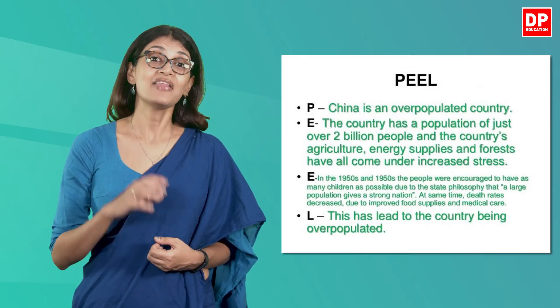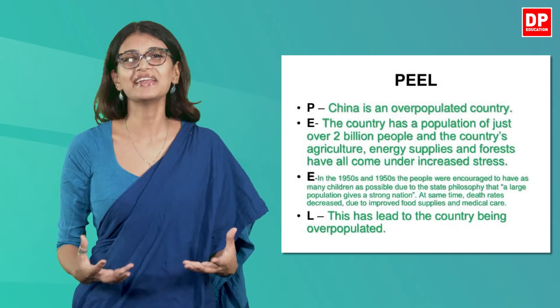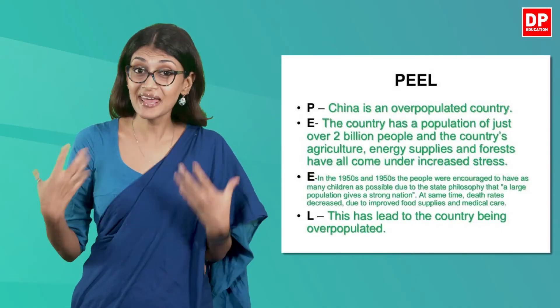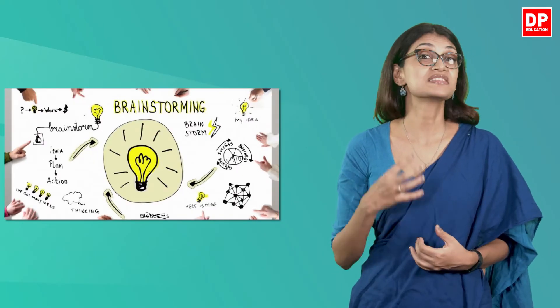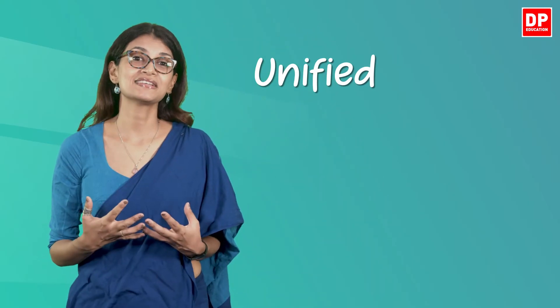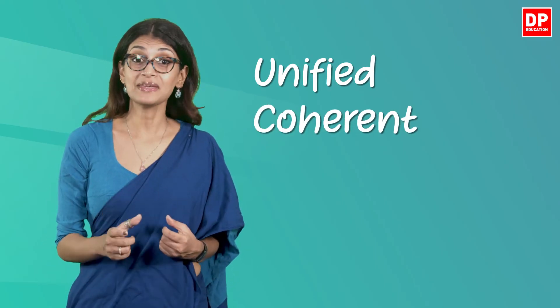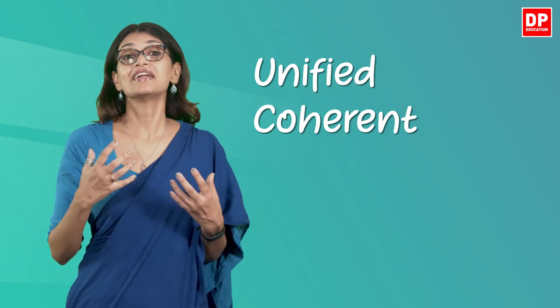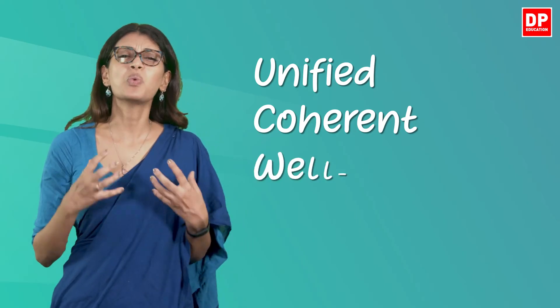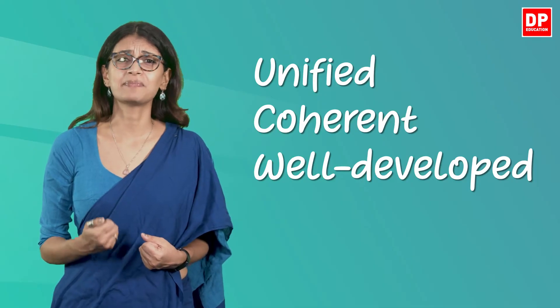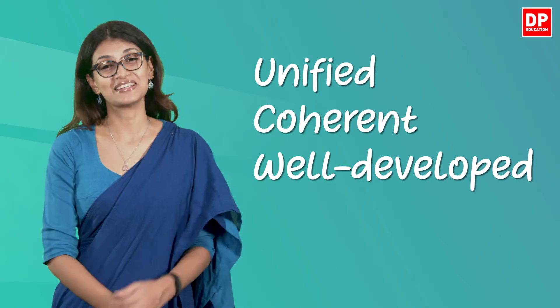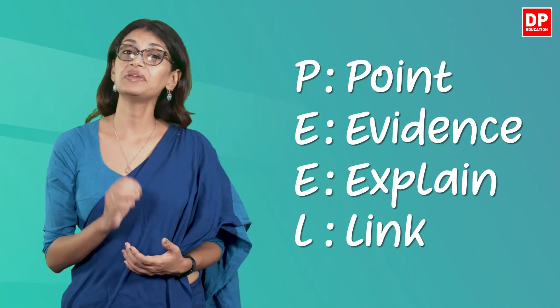In an example, the main point is given and then supported by evidence and explanation, and finally there is a link back to the main point — or you can link it to the next point. Once you decide what your main sentence is, you need to brainstorm for ideas that will support that idea. After listing out your points, you must ensure that every paragraph is unified — all sentences must relate to a single main idea. It also has to be coherent, meaning sentences should be arranged in a logical manner with a definite flow. Finally, remember to have a well-developed paragraph: every idea should be adequately explained with supporting ideas and evidence. If you follow the PEEL format, you will notice a world of difference.